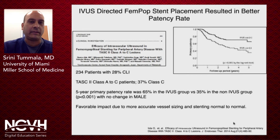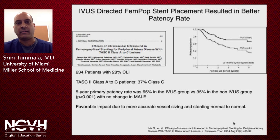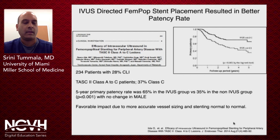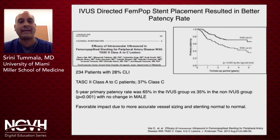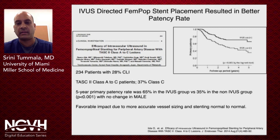What about stent placement in the SFA and popliteal artery? A study comparing IVUS-directed fempop stent placement compared to angiography-guided showed a significant patency benefit. This included 234 patients, 28 percent with CLI. Five-year primary patency rate was 65 percent in the IVUS group versus 35 percent in the non-IVUS group, with really no change in MAL. It showed a favorable impact due to accurate vessel sizing and being able to stent normal artery to normal artery.